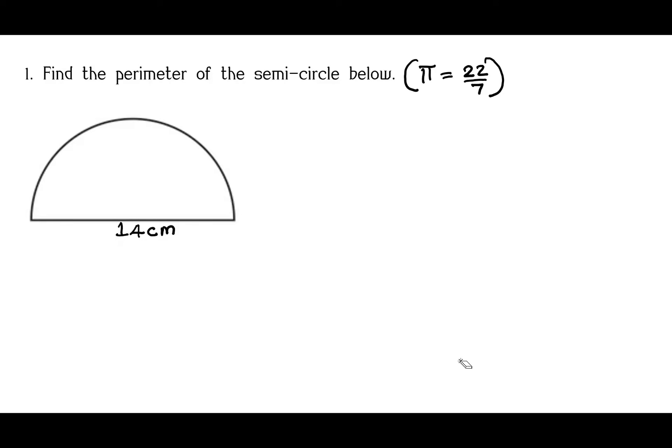Now let's look at this problem: find the perimeter of the semicircle below. π is 22/7. Remember, perimeter is the distance around the figure. So to get this perimeter, we need to know how many centimeters are here. After knowing that, we will add the 14 to get the distance around this figure. Let us find the length of this curved part.